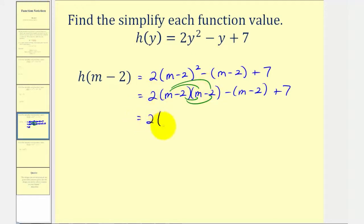So we'll have 2 times the quantity m times m is m squared. Then we have m times negative 2, that's negative 2m. Then we have negative 2 times m, that's another negative 2m, so minus 4m. Negative 2 times negative 2 is plus 4.